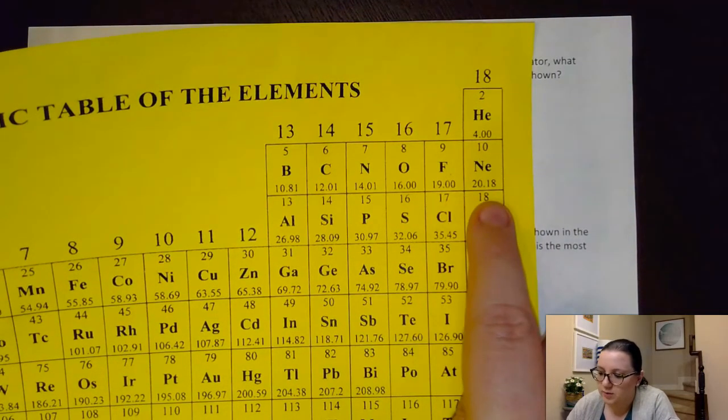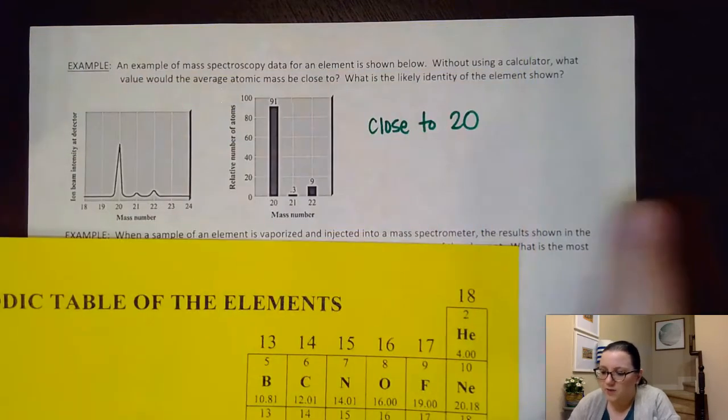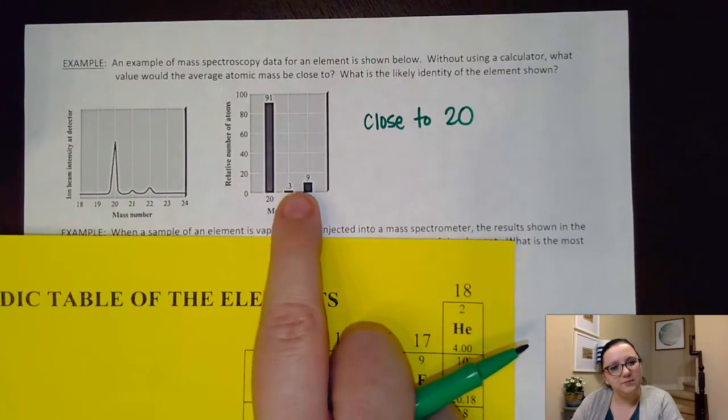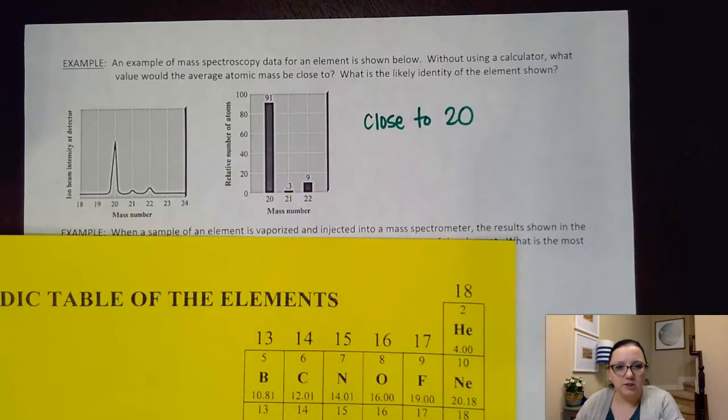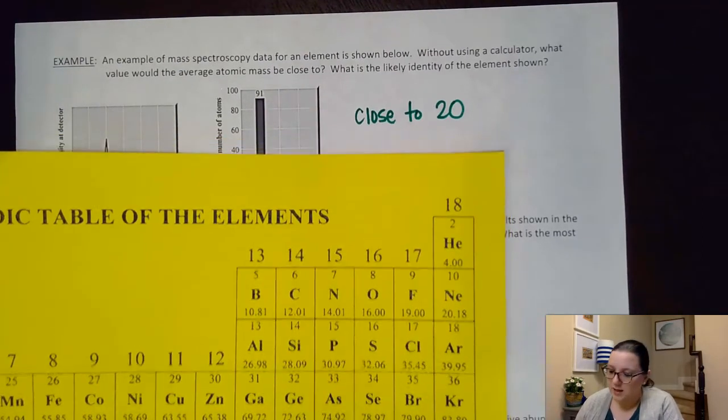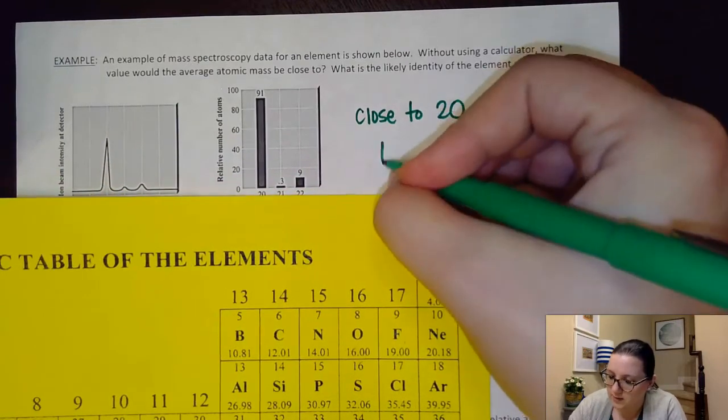Fluorine's at 19, Neon's at 20.18. I know I've got to be close to 20, but I also need to be just a little bit higher than 20, because this 21 and 22 would average in with it. So more than likely, my element here would be Neon.